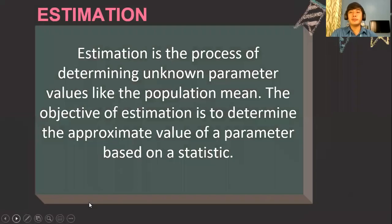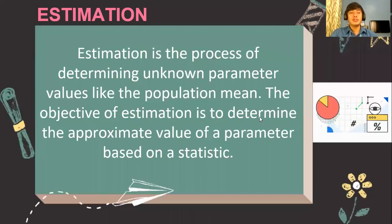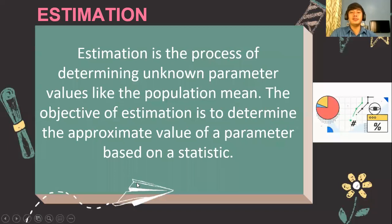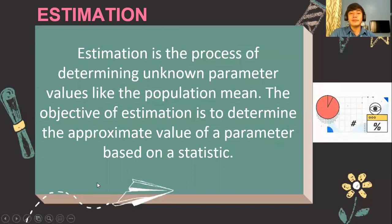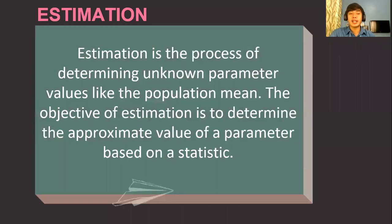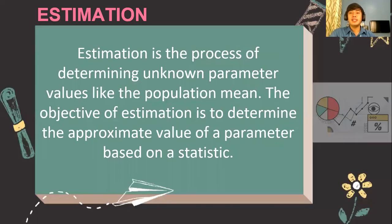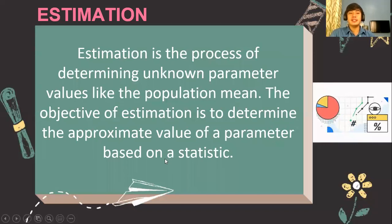What is the process of estimation? Estimation is the process of determining unknown parameter values, like the population mean. The objective of estimation is to determine the approximate value of the parameter based on certain statistics. We always decide on certain things based from the estimate of the population.